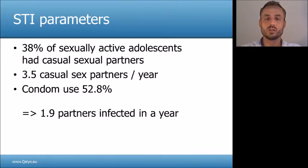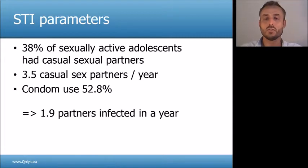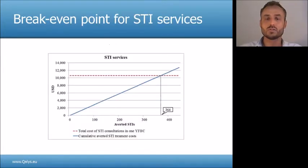The following parameters were used to estimate the cost savings. According to the Moldovan Youth Association's CAP study in 2013, 38% of all sexually active adolescents had casual sex partners, with an average of 3.5 casual sex partners per year. Condoms were used in 52.8% of these encounters. Based on these parameters, an STI-infected adolescent would infect 1.9 new partners in one year. This graph shows the break-even point for the STI services.